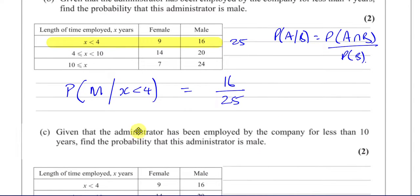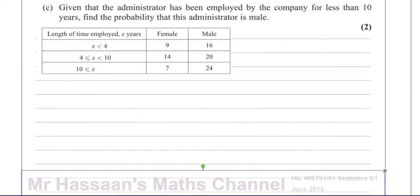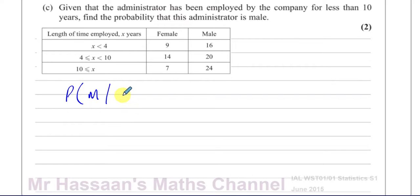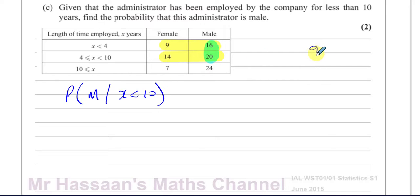Part C says: given that the administrator has been employed by the company for less than 10 years, find the probability that this administrator is male. So we need the probability of male given X is less than 10. X less than 10 includes all of those employed for less than 10 years. The number that are male from those groups is 36. The total employed less than 10 years is 90 minus 31, which is 59. So the answer is 36 over 59.